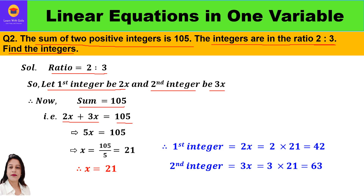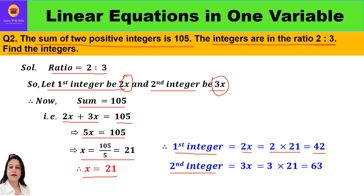2x plus 3x is 5x, which equals 105. So x is equal to 105 divided by 5, that is 21. The value of x is 21. The first integer, which we assumed to be 2x, is 2 into 21, that is 42. The second integer, 3x, is 3 into 21, which equals 63.